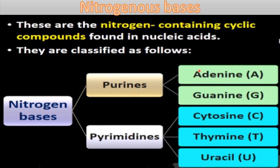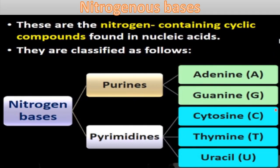Our next topic is nitrogenous bases — nitrogen-containing cyclic compounds found in nucleic acids such as DNA and RNA. There are two main types: purines and pyrimidines. Purines are adenine (A) and guanine (G). Pyrimidines are cytosine (C), thymine (T), and uracil (U).